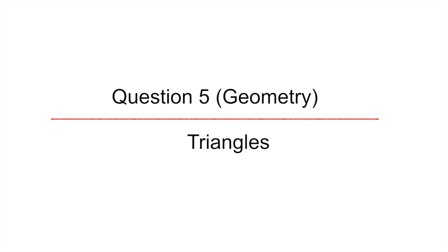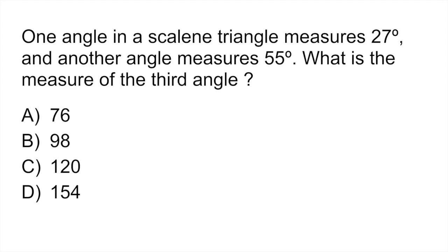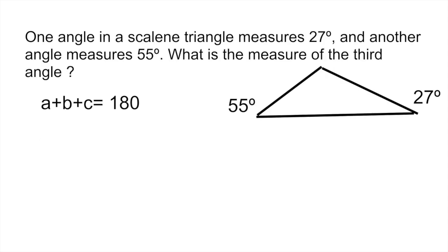The final question is a geometry question which looks at triangles. One angle in a scalene triangle measures 27 degrees and another angle measures 55. What is the measure of the third angle? A lot of people get stressed thinking what's a scalene triangle. What you have to remember is that whatever triangle you get, a triangle is 180 degrees. That means all three angles a, b, and c are going to equal 180. They're giving you two of those angles: one is 27 degrees, the other is 55, and they want us to find the third angle.